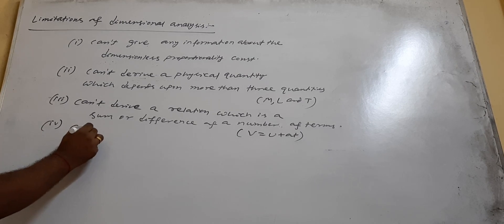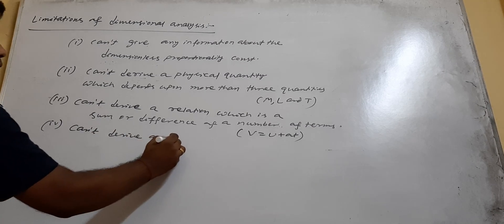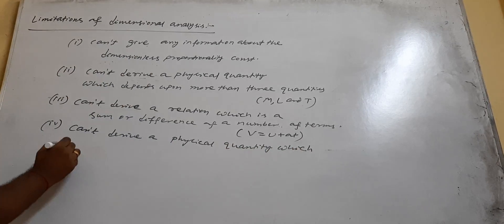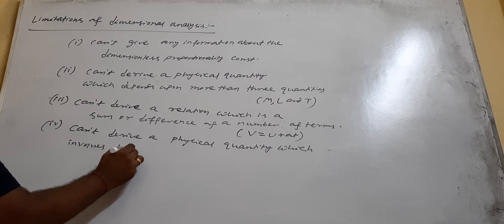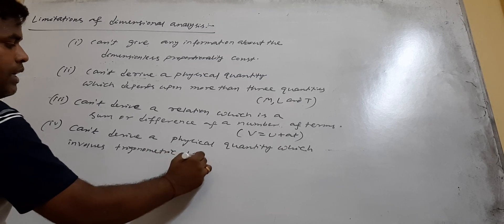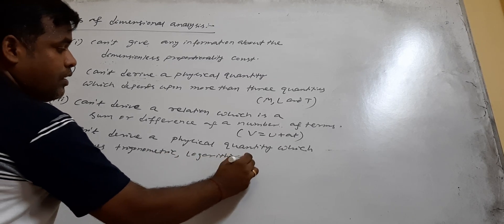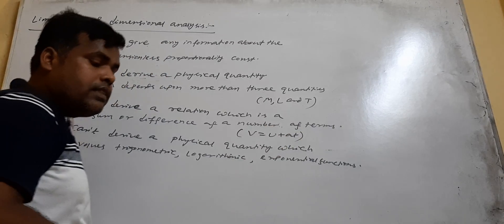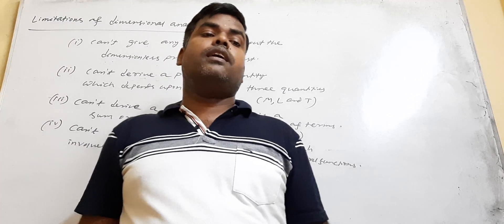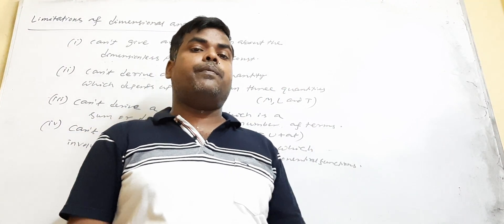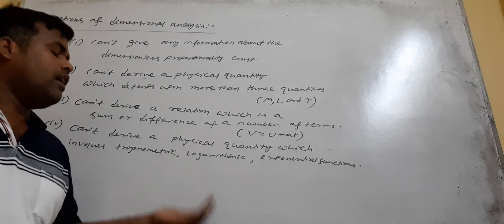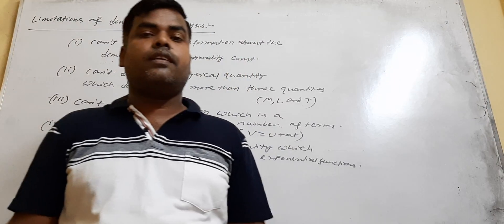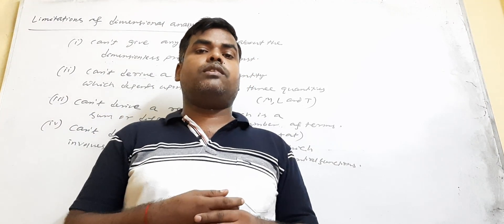Also, it cannot derive a physical quantity which involves trigonometric, logarithmic, or exponential functions. Many relations in physics depend upon exponential, logarithmic, or trigonometric functions, so these formulas cannot be obtained by using dimensional analysis. These are the drawbacks and limitations of dimensional analysis. In the next class, we will discuss significant figures.